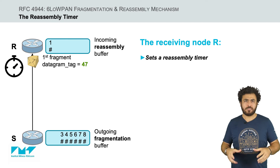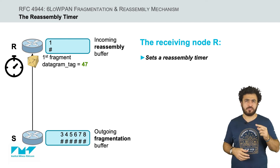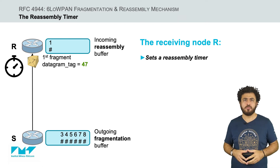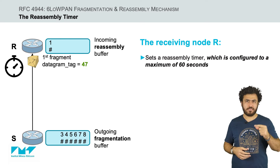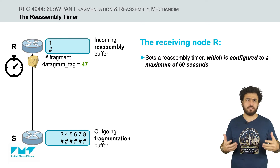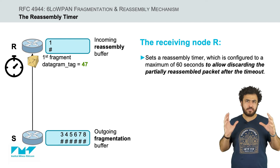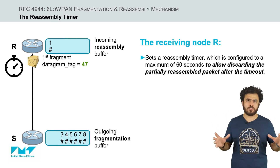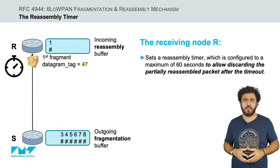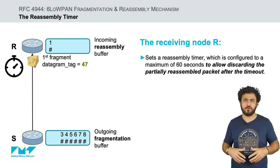Furthermore, once a receiver successfully receives a new fragment with a certain datagram tag value, it initiates a reassembly timer. The value of this reassembly timeout must be configured to a maximum of 60 seconds, which is the timeout in the IPv6 reassembly procedure. If the IPv6 datagram has not been reconstructed within this time, the reassembly operation is aborted while the received fragments are discarded.